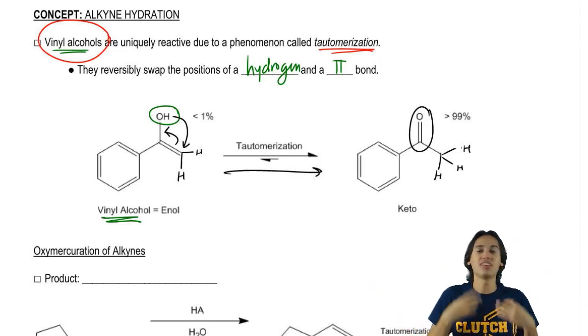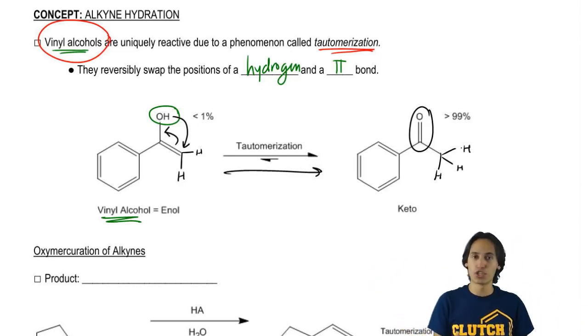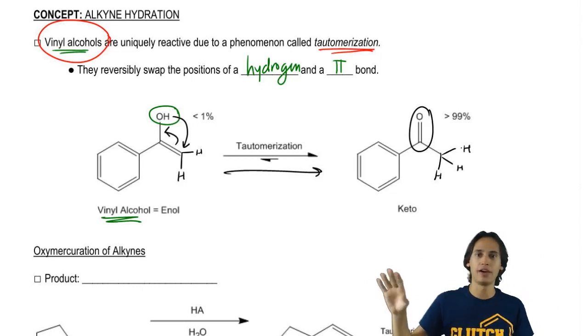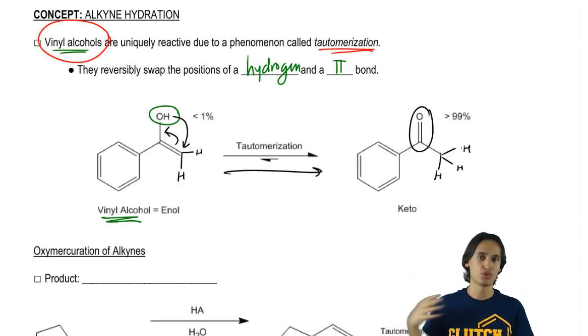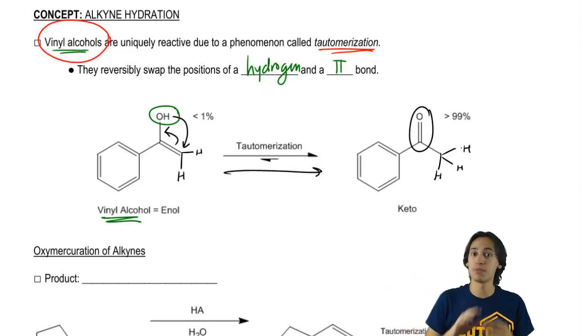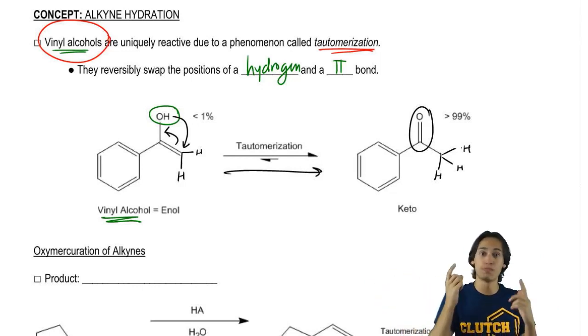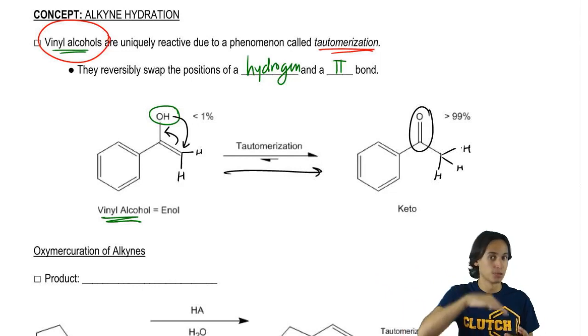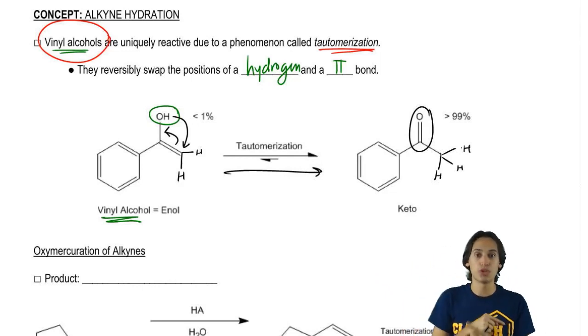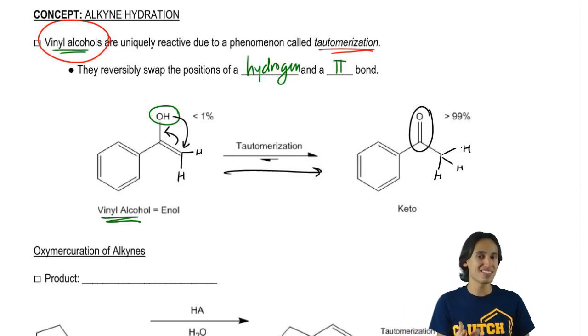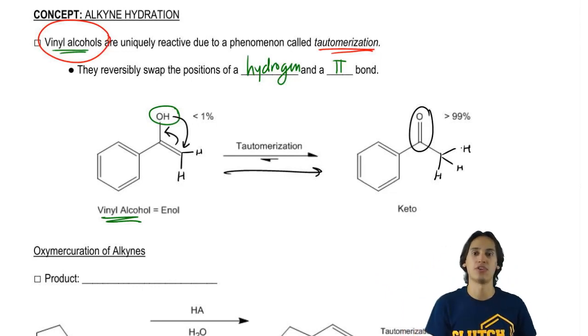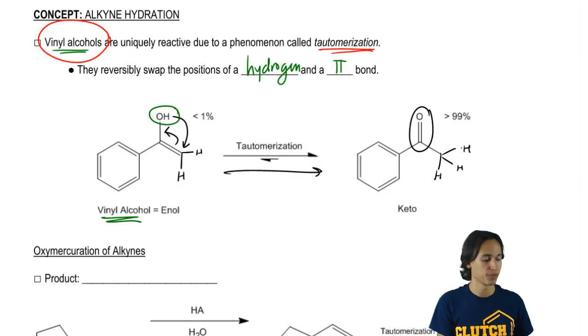How did that happen? Unfortunately it would take 20 minutes to explain the full mechanism. So instead, just memorize that a double bond and a hydrogen switch places any time that you have a vinyl alcohol.